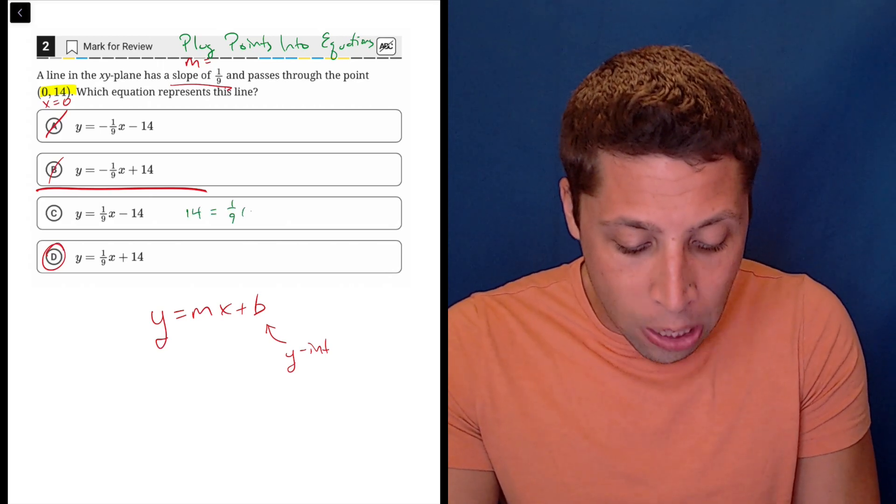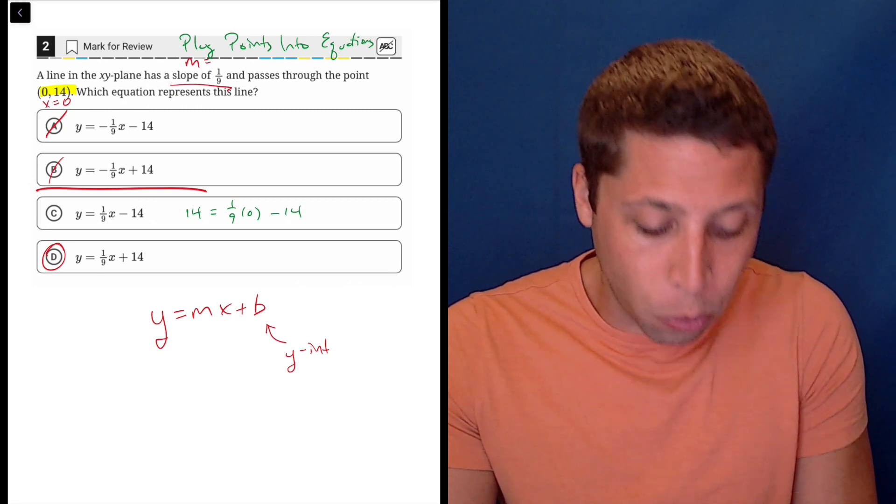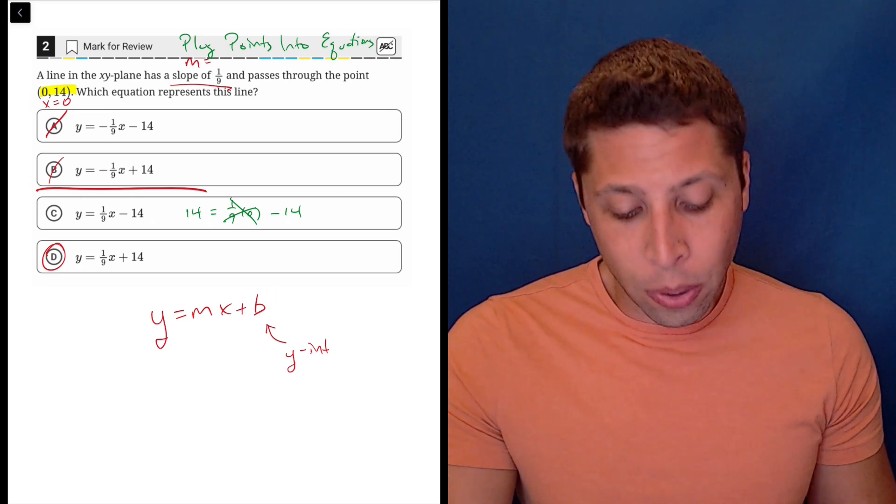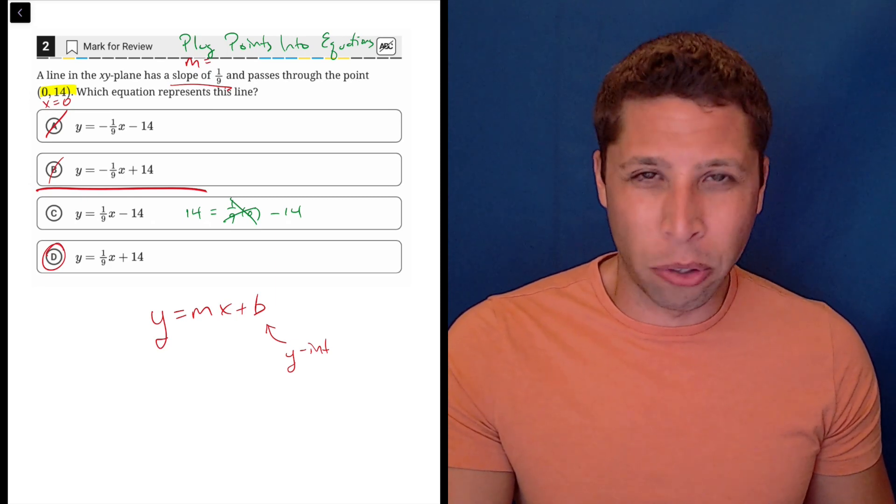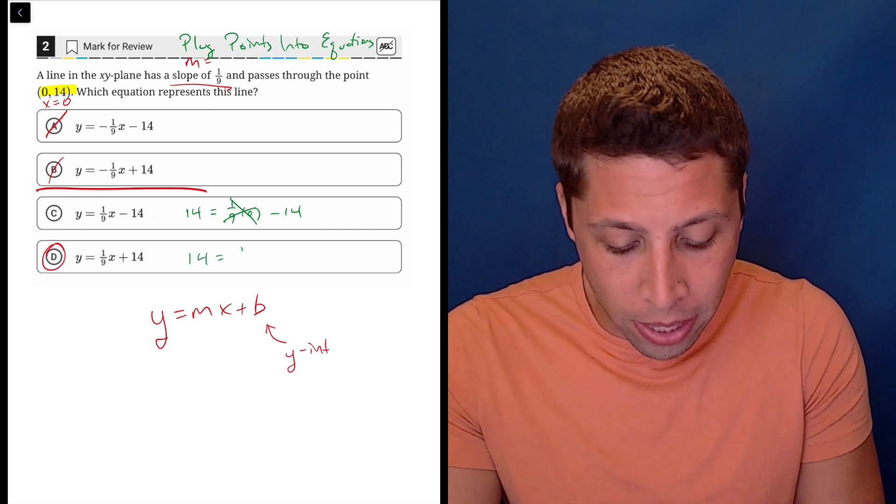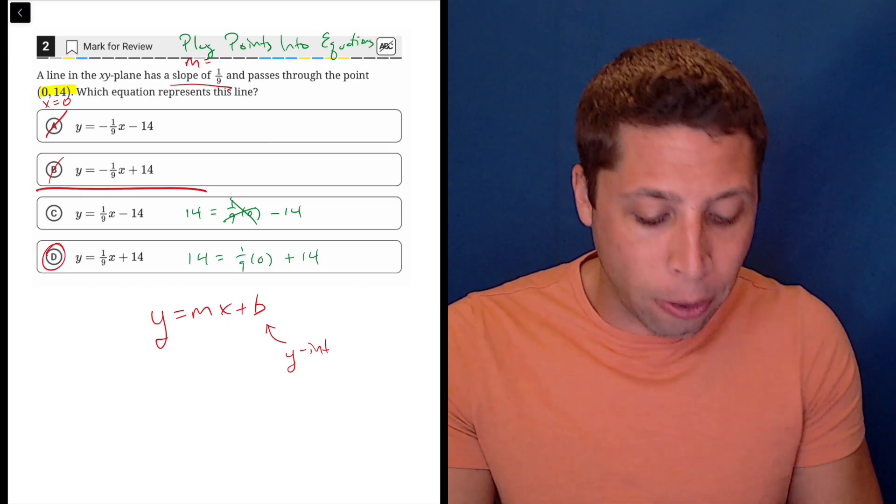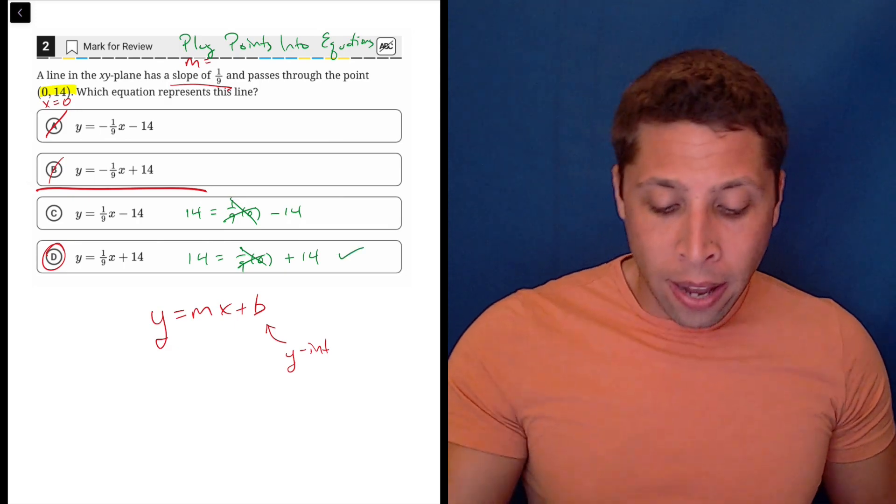for y, and then take 1/9 of 0 minus 14, well, 1/9 of 0 is 0, so that goes away. So here we have 14 equals negative 14, which is not true. But if we did the same thing here, we would have 1/9 of 0 is still 0, but now it's positive 14, so this does check out.